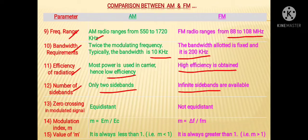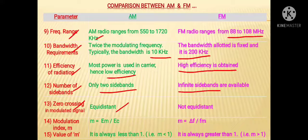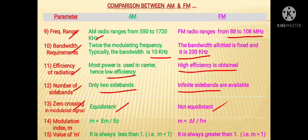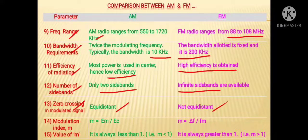Next is about zero crossing in the modulated signal. In case of AM, the zero crossing level is equidistant, and in case of FM it is not equidistant, because in FM the frequency is going to change. That is why the zero crossing level is also going to change every time.